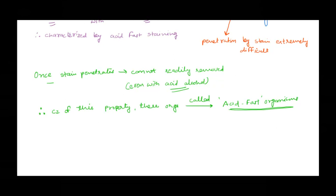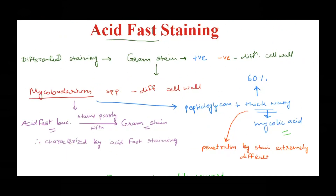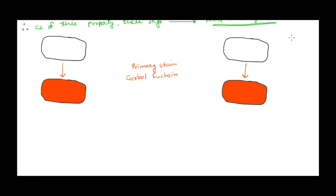Bacteria that do not have mycolic acid and will get decolorized are called non-acid fast organisms. Now let's look at the acid fast staining procedure — how we stain and differentiate acid fast bacteria from non-acid fast bacteria. Similar to gram staining, we need a primary stain that stains all cells, then a decolorizing agent, and then a counter stain. The same sequence is followed here.